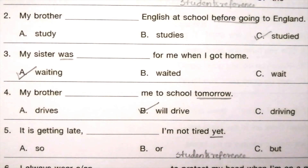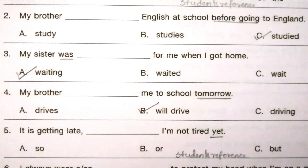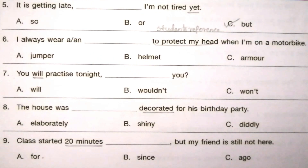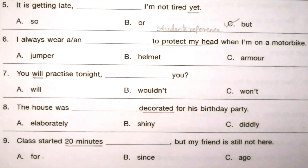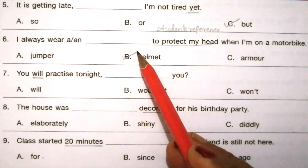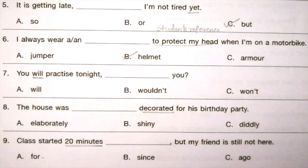Question 5: It is getting late ___ I'm not tired yet. 'It is' is the keyword. Options: so, but. The answer is C — 'but'. It is getting late but I'm not tired. Question 6: I always wear a ___ to protect my head when I'm on a motorbike. 'To protect my head' is the keyword. Options: jumper, helmet, armor. The answer is B — 'helmet'. I always wear a helmet to protect my head when I'm on a motorbike.